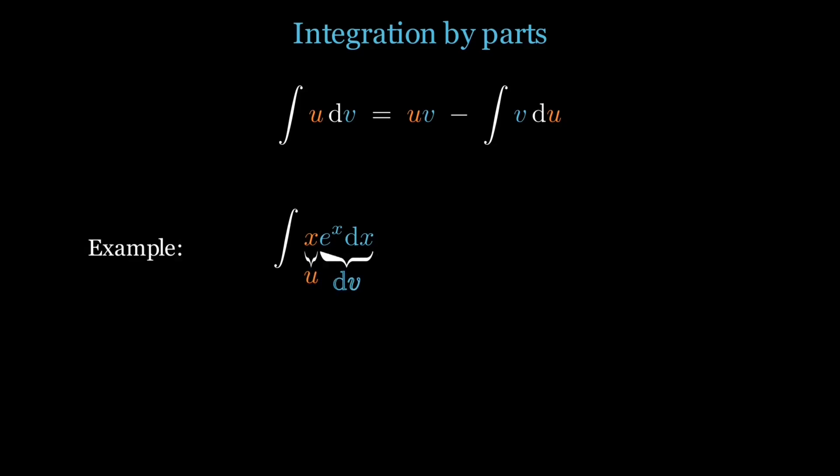For example, with x times e to the power x, choosing u equals x means its derivative drops the power, while dv equals e to the power x stays the same when integrated. That choice turns the product into a boundary term minus an easier exponential, peeling the x away in one step.